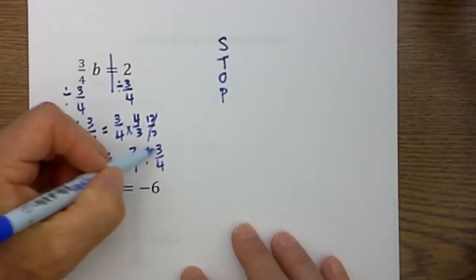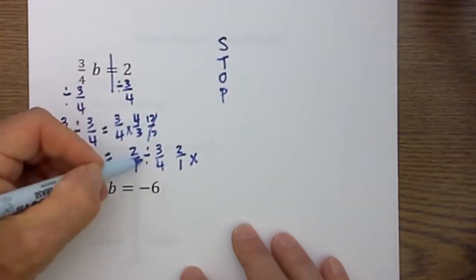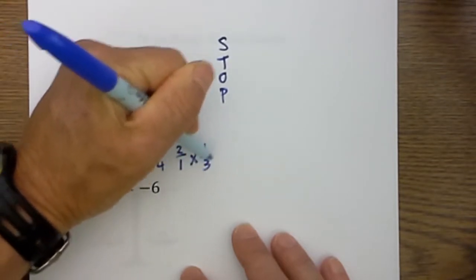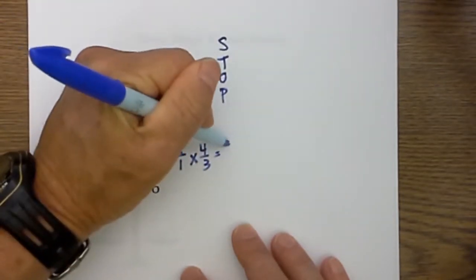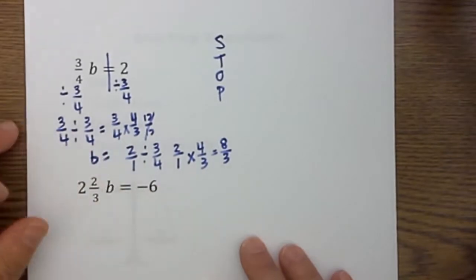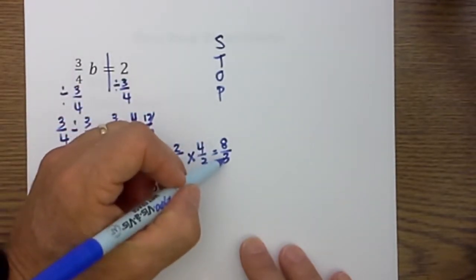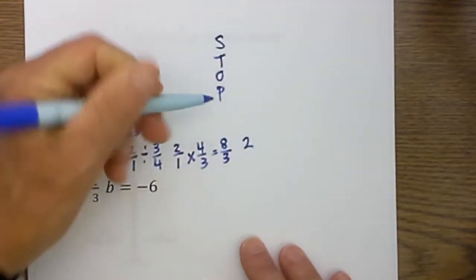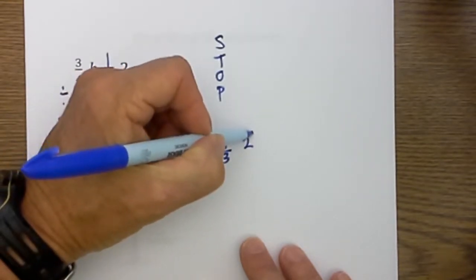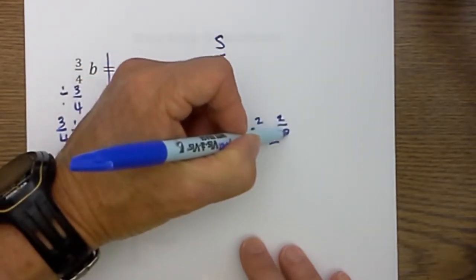Remember I will keep, change and flip so this will become 2 over 1 times, change the sign, flip the fraction, and then I just multiply straight across 2 times 4 is 8 and 1 times 3. At this point you have a solution but you may not like it in an improper fraction form and you can convert it to a mixed fraction by dividing the bottom into the top. So 3 will go into 8 two times which is 6 and that gives me a remainder of 2 and I can rewrite that as 2 and 2/3.